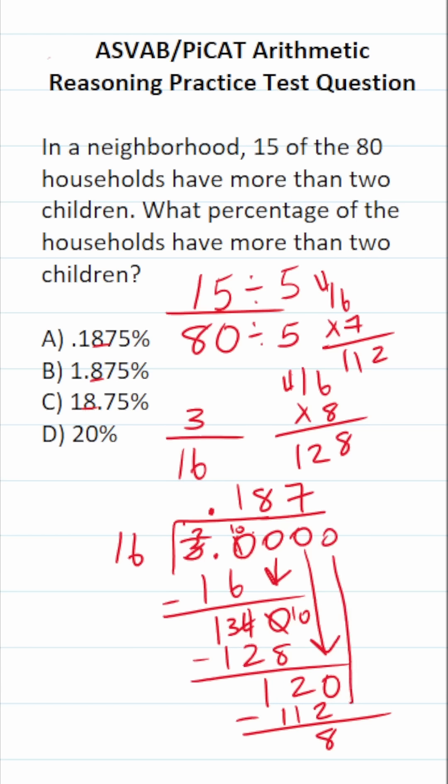120 minus 112 is going to be 8. And again, we have a 0 that we can drop down. How many times does 16 go into 80 without going over? Based on our answer choices, I know it's going to be 5 times. If you need to confirm that off to the side, you can. 6 times 5 is 30, carry a 3. 1 times 5 is 5 plus 3 is 8. So we can see that 16 times 5 is exactly 80 with no remainder. So 3 over 16 is the same thing as 0.1875.